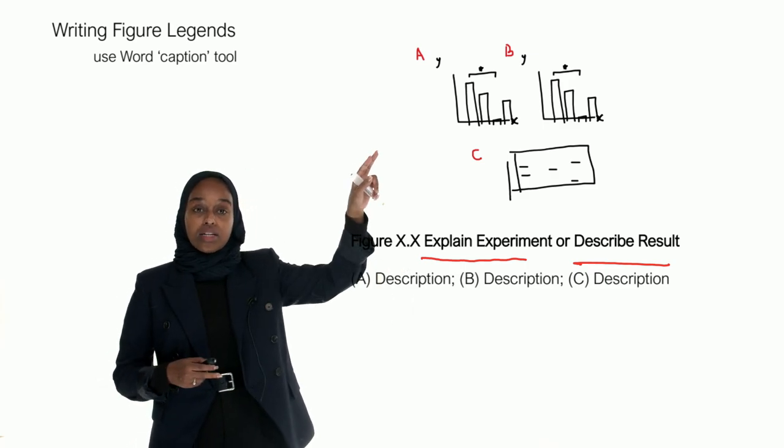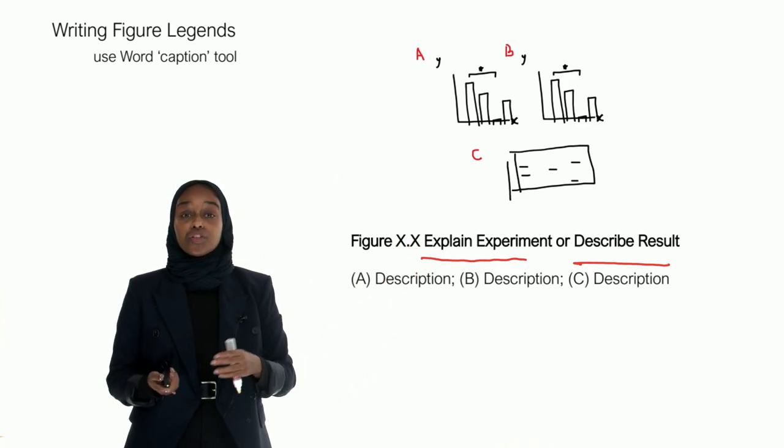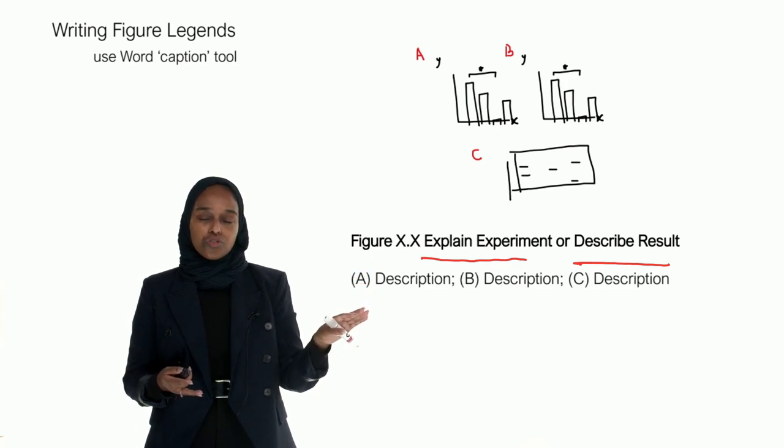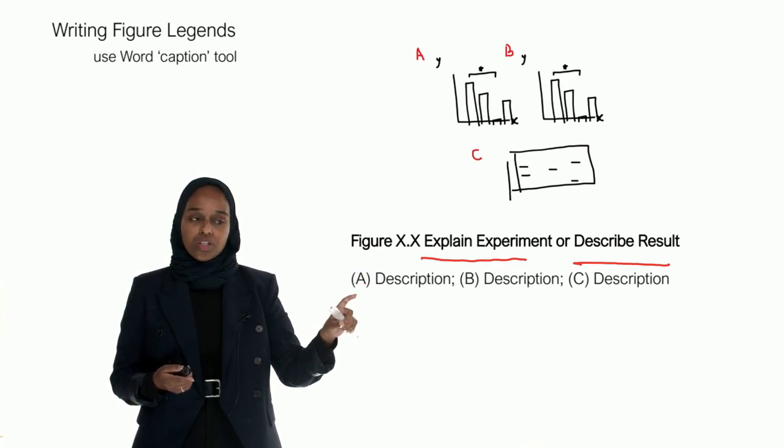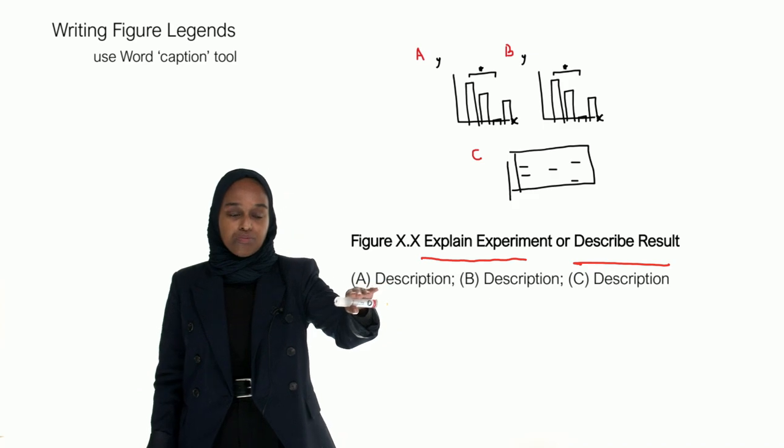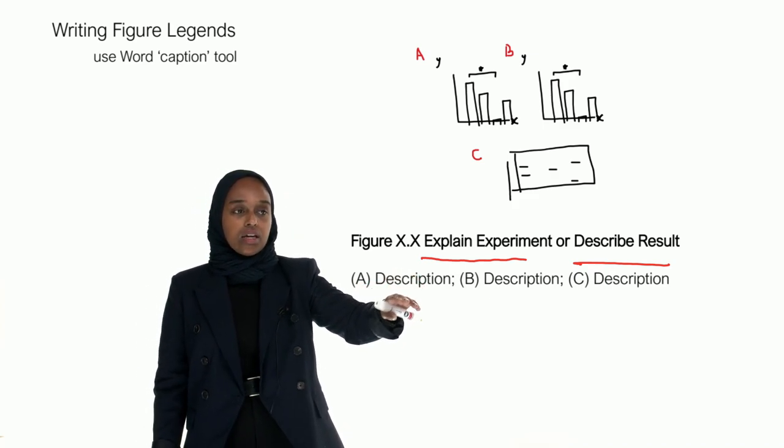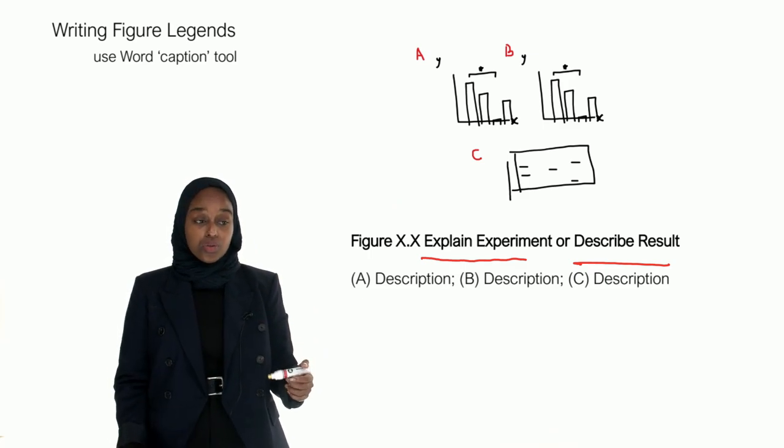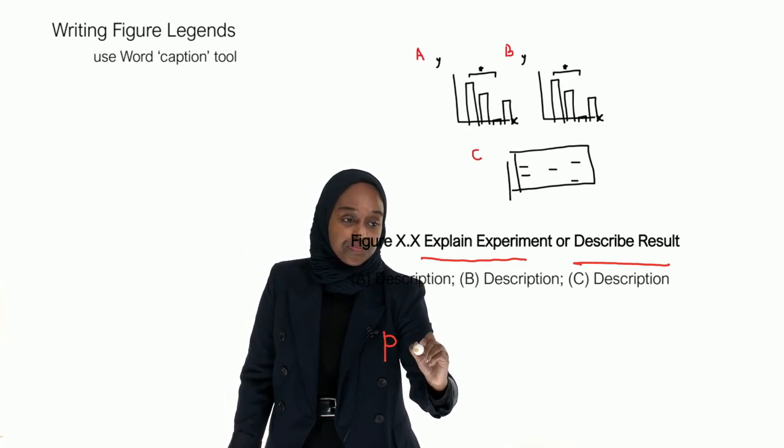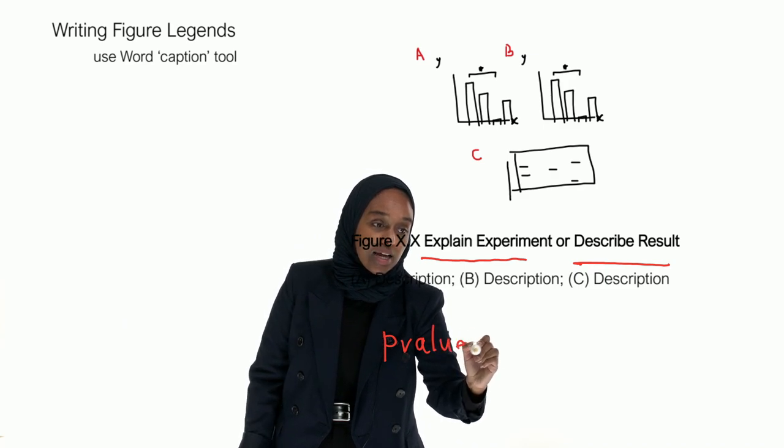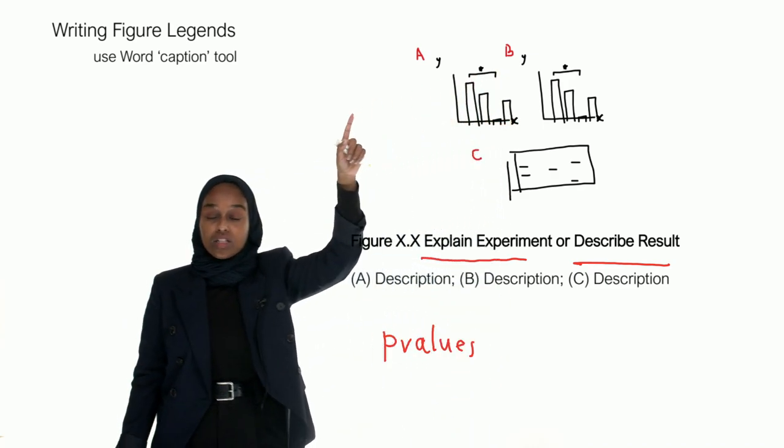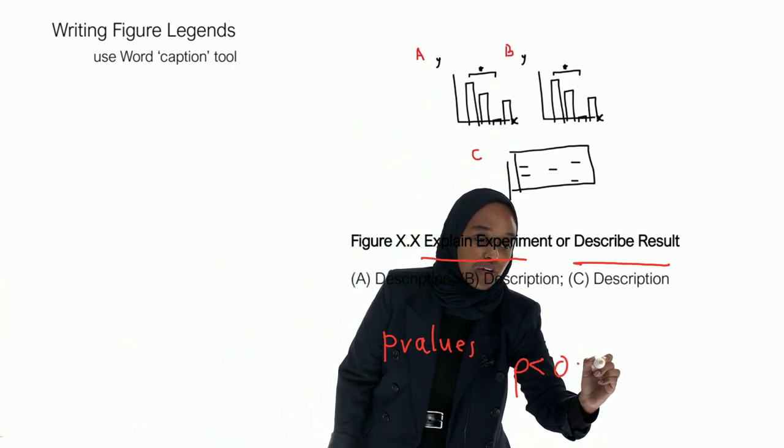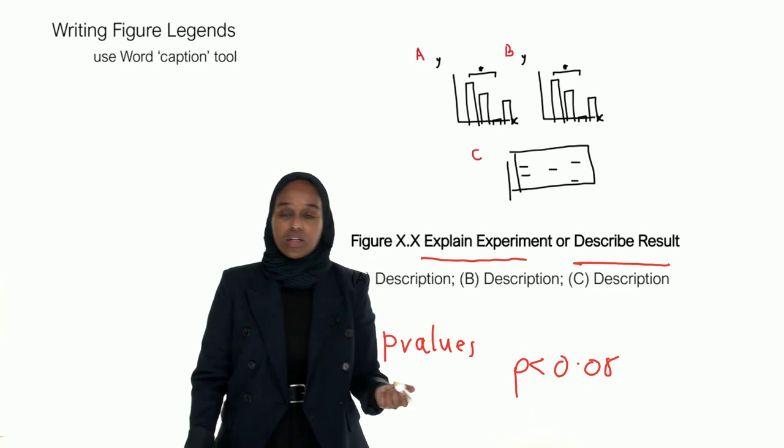You need to now break down A, B and C to the point where you don't necessarily have to go into the text to understand anymore. The detail should really be in that caption. So then you have A, put that into brackets and then you describe it. So you'd say everything that's in A, all the detail that's in A and that includes p-values. So we said that's significant, the asterisk there. So what's the p-value? If the p-value is less than 0.05, you need to write down what it is.